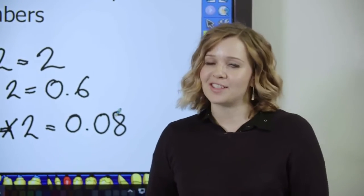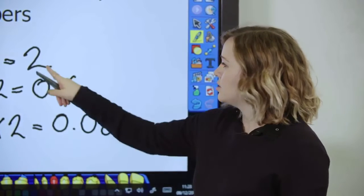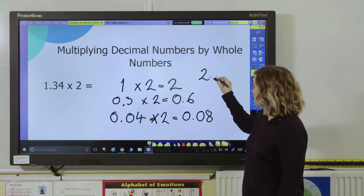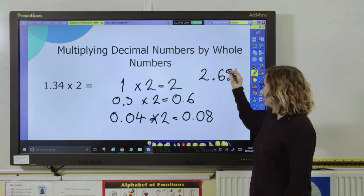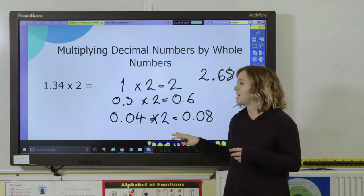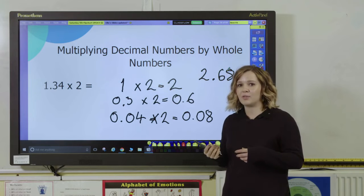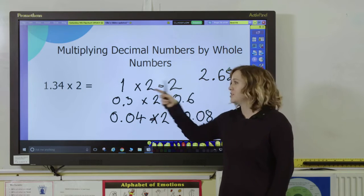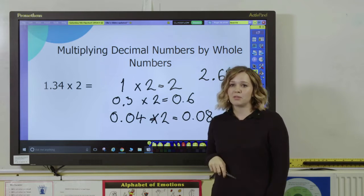Now they just need to add all of that together and that will give them their answer. So two ones, six tenths and eight hundredths gives me 2.68, and you can see that that's double. Now the good thing about writing this method out and partitioning it is that it reinforces the steps that pupils take, so eventually they don't have to write these out—they can just quickly do 1.34 multiplied by 2.